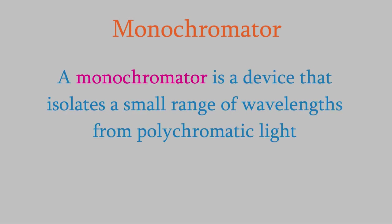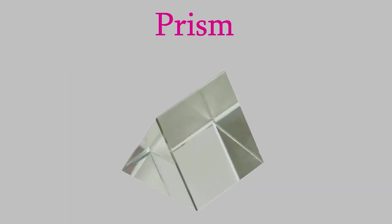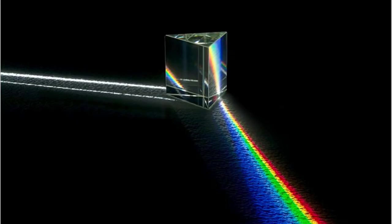A monochromator is a device that separates polychromatic light into its component wavelengths. The two most common types of monochromator are prisms and diffraction gratings. You're probably already familiar with prisms. A prism is a piece of glass or plastic, usually in the shape of a triangle. The incoming light is refracted by the glass, and the angle of refraction depends on the wavelength of the light. As a result, the different wavelengths of light emerge from the prism in different directions.